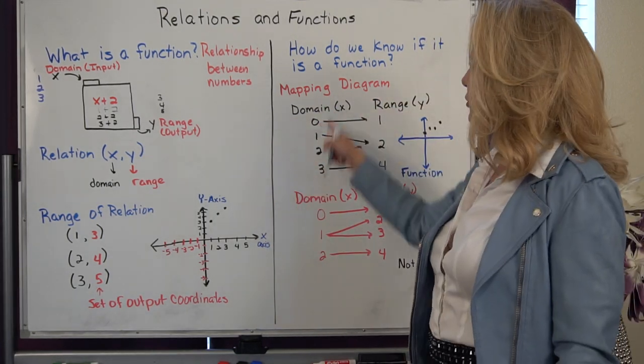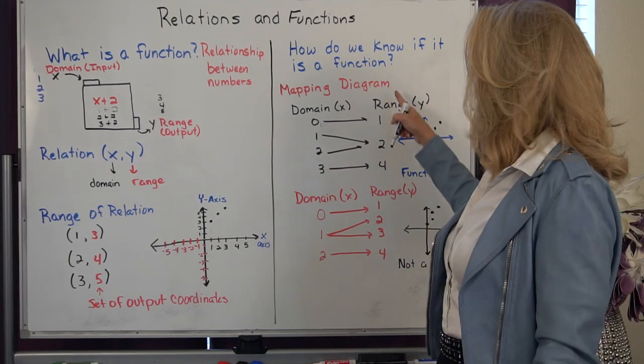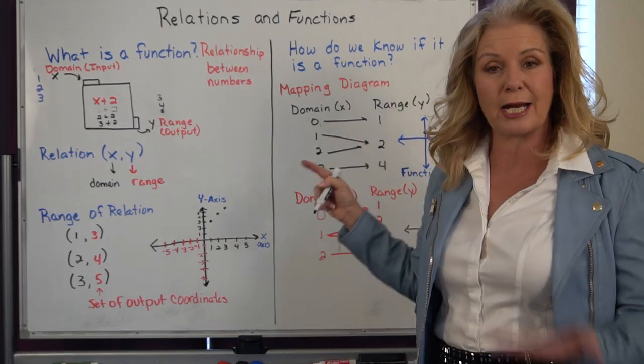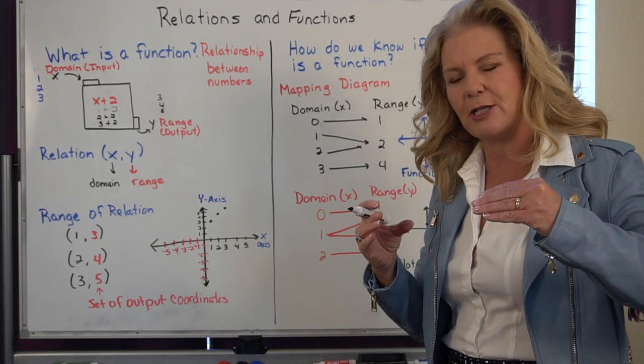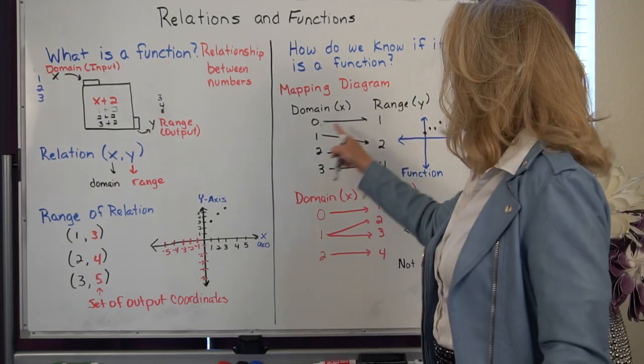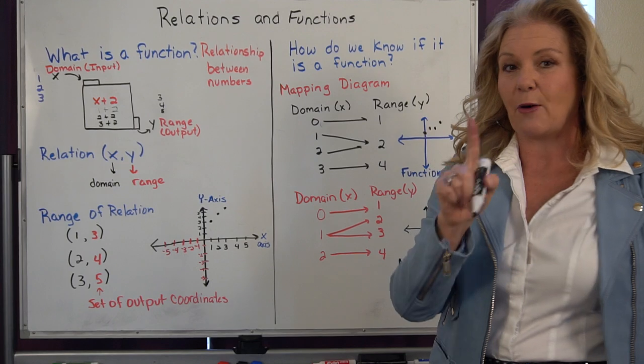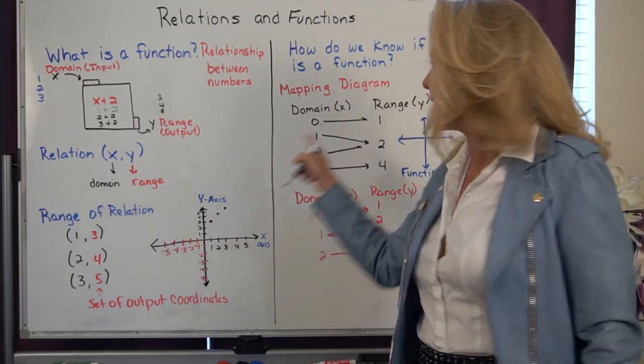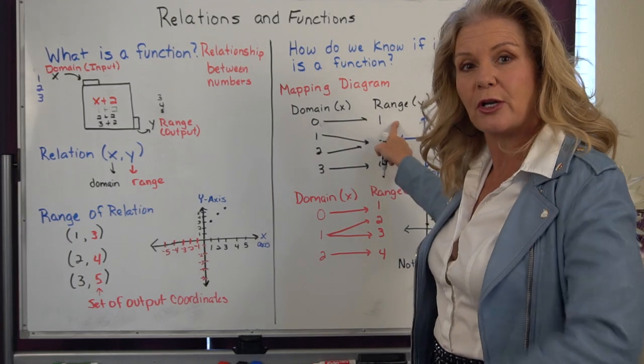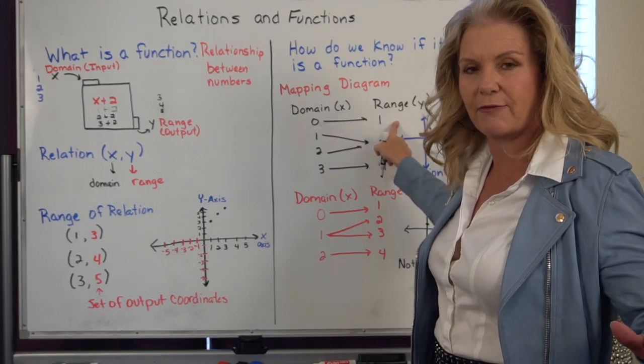And all that's doing is taking your domain or your x and lining up with your range or your y. And you're making the connection between what went into the machine and what popped out of the machine by the arrow. Now, as long as every input number has its own output number, then we know that we have a function.